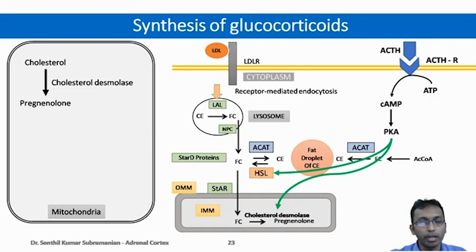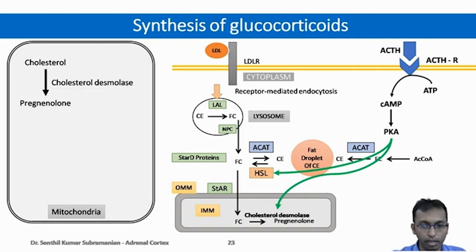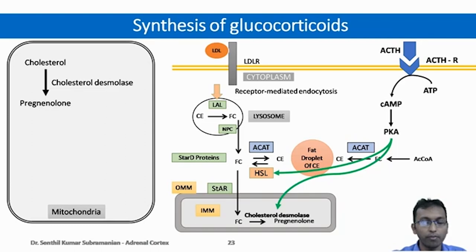Glucocorticoids are mainly under the influence of adrenocorticotropic hormone. ACTH acts on ACTH receptors, which leads to the synthesis of protein kinase A, which can act on hormone-sensitive lipase to convert stored cholesterol to free cholesterol. Further, the free cholesterol, when it moves into the mitochondria, is converted into pregnenolone by cholesterol desmolase, the function of which is again stimulated by ACTH.